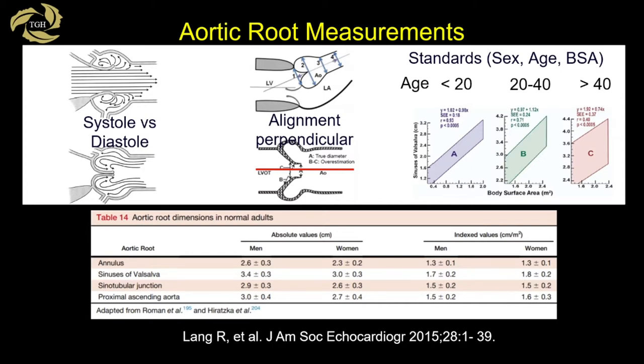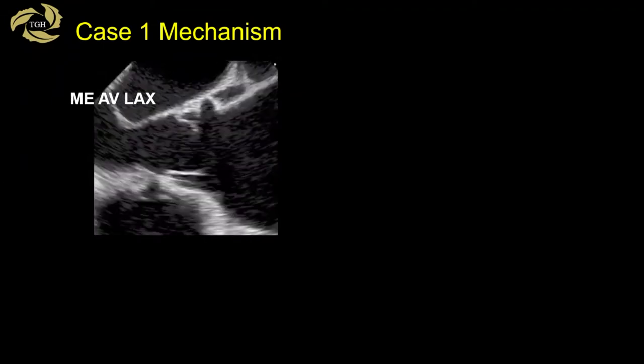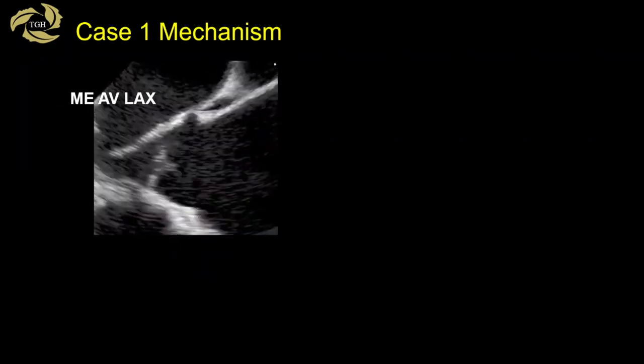From Lange's 2015 quantitative paper, absolute values differ slightly between men and women and vary by age and body surface area. There are nomograms showing that as you age, the sinus of Valsalva in particular has a larger range over which normal occurs. When assessing aortic insufficiency, it's important to look for the mechanism and to examine how well the cusps coapt together. It's important to have normal coaptation in mind, because recognizing abnormal assumes you know what normal looks like.